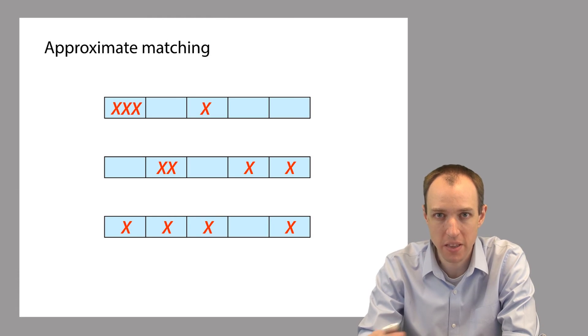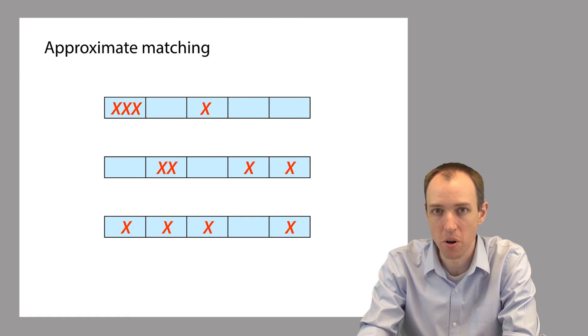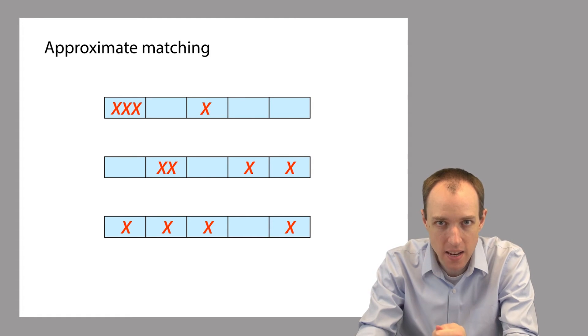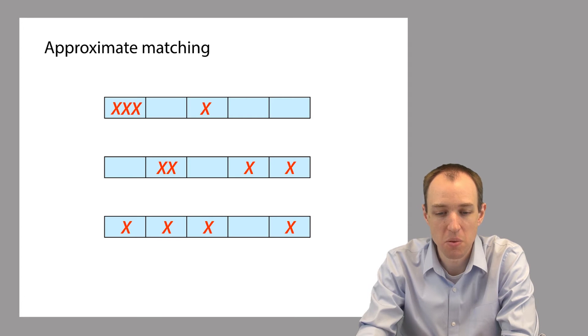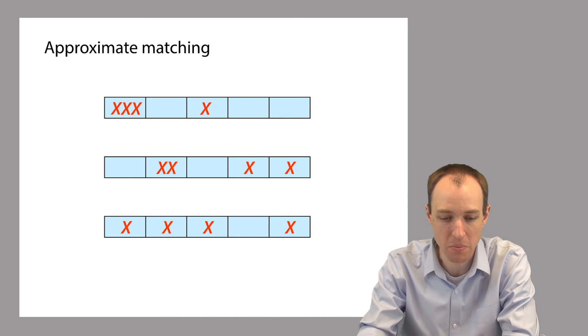So why does this principle hold? Well basically it's because if you have k edits and you go about distributing them across these k plus one partitions, every time you put down an edit, you're changing the sequence of the partitions so that it doesn't match anymore. But if you only have k edits to use, and there are k plus one partitions, then you can't change all k plus one of them, you can only change up to k of them.